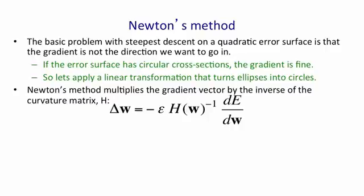If it's a truly quadratic surface, and we choose epsilon correctly, which is quite easy to do, we'll arrive at the minimum of the surface in a single step. Of course, that single step involves something complicated, which was inverting that Hessian matrix.